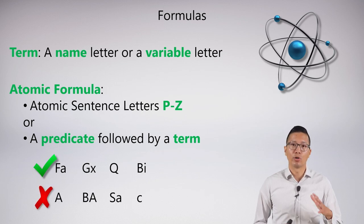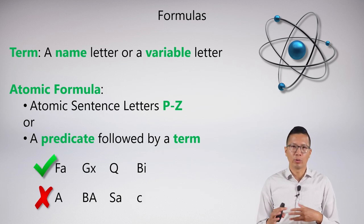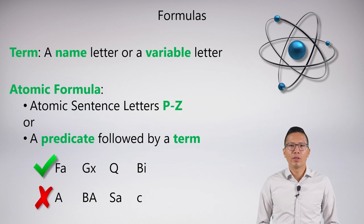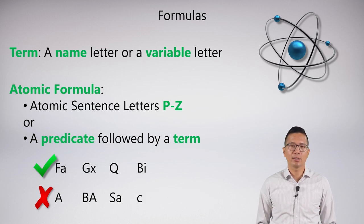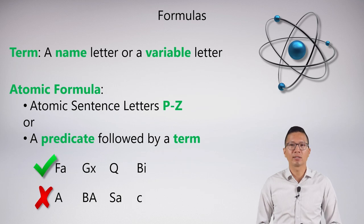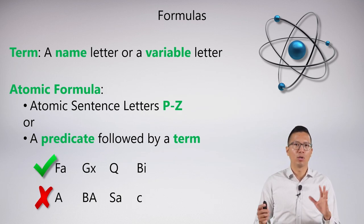Here are examples of things that are not atomic formulas. Capital A alone is just a predicate letter — not followed by a term, so not atomic. Two predicate letters next to each other is also not atomic. Capital S followed by lowercase a looks okay, except capital S is an atomic sentence letter P through Z, not a predicate letter. And just C on its own is a term alone — we never write just a name or variable by itself.